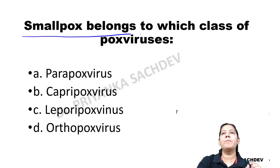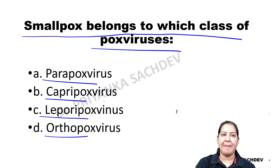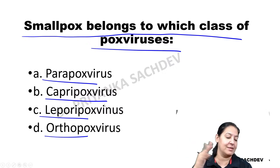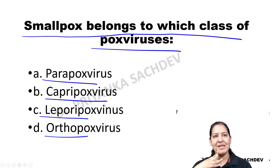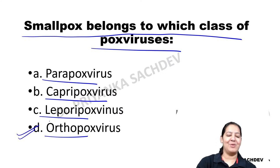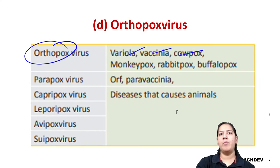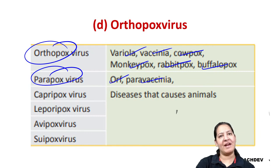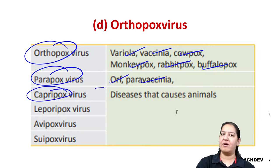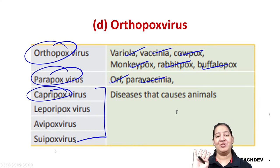MCQ: Smallpox belongs to which class of pox viridae? Options: orthopox, parapox, mollusciopox, capripox. The correct answer is orthopox. Under orthopox we have variola, vaccinia, cowpox, monkeypox, rabbitpox, and buffalopox. Parapox includes ORF and paravaccinia. Capripox includes diseases of other animals.